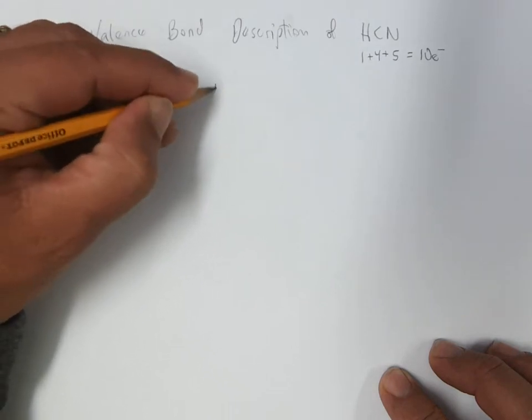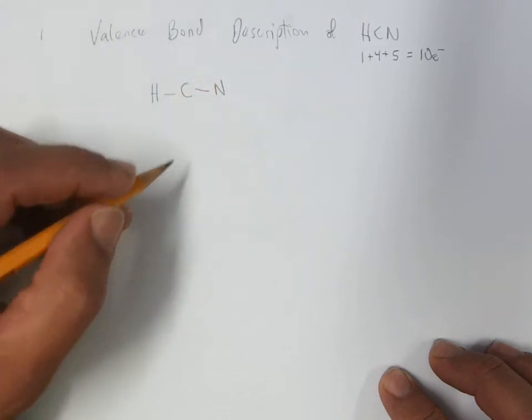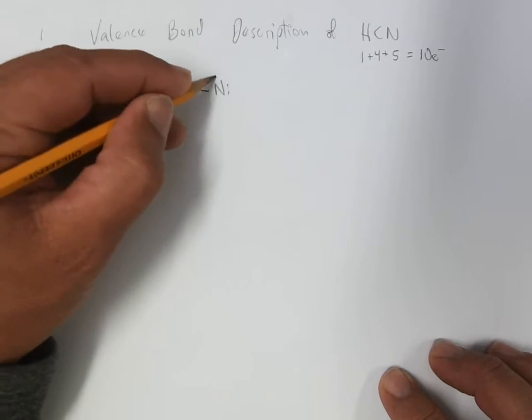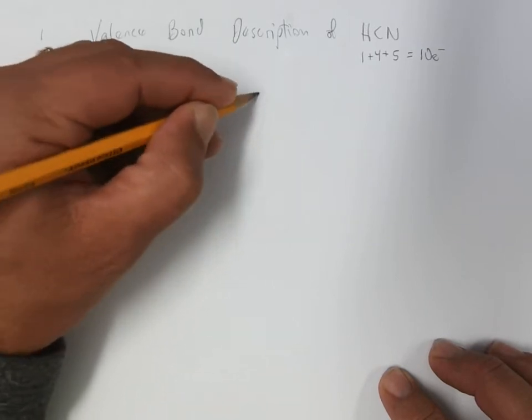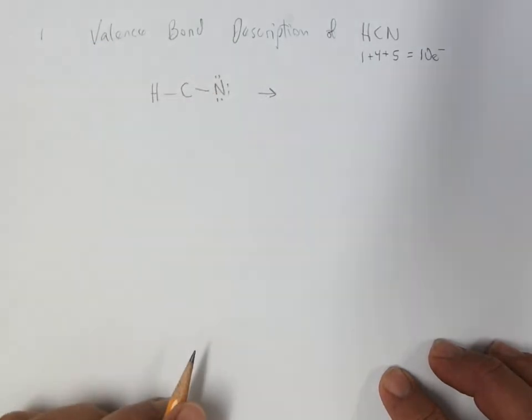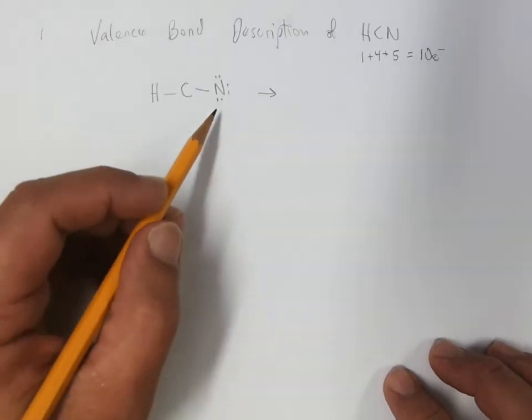Connect up with single bonds. And then fill the octets on the noncentral atom. And for people who have studied enough, they would know the dot structure of HCN already.